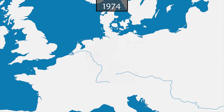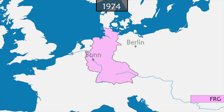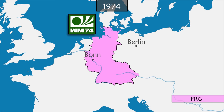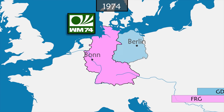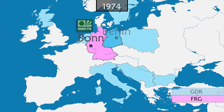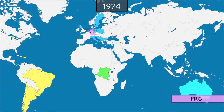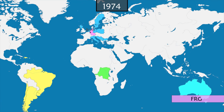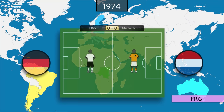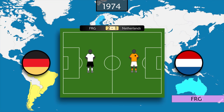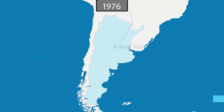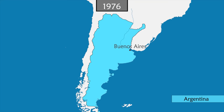In 1974, in the middle of the Cold War, West Germany hosts the World Cup — including in West Berlin, with the Berlin Wall still dividing the city. On this occasion, the only match in history between West and East Germany takes place. In the final, West Germany wins against the Netherlands.